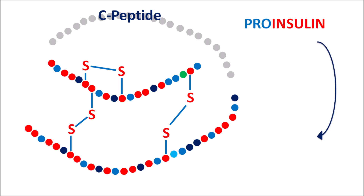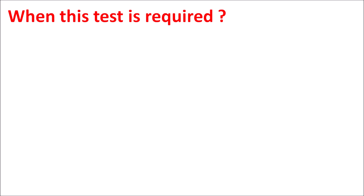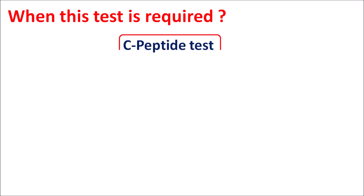By the action of endopeptidase enzymes, the C-peptide is removed from the insulin structure, converting pro-insulin into insulin. Both pro-insulin and insulin are stored and can be released by exocytosis. The levels of C-peptide are an indicator of insulin levels, allowing us to assess insulin levels within the body and differentiate between type 1 and type 2 diabetes.